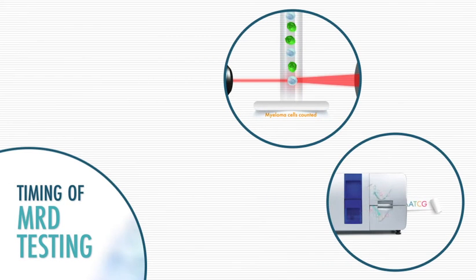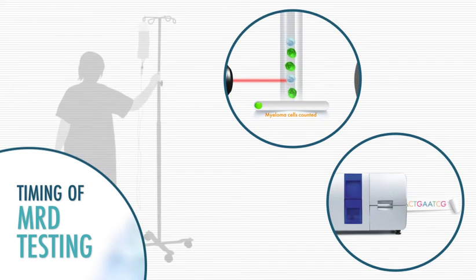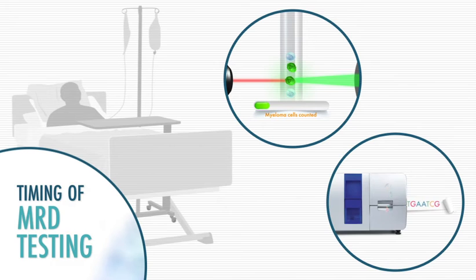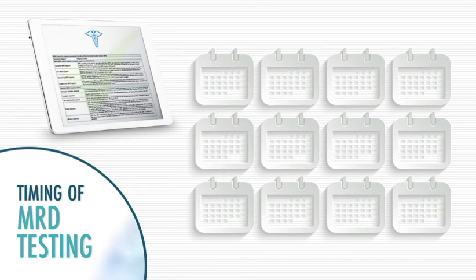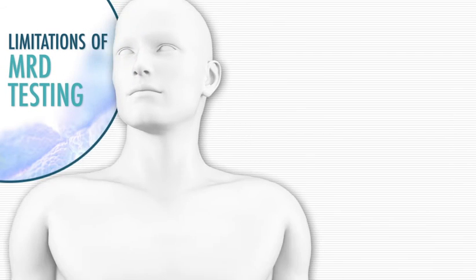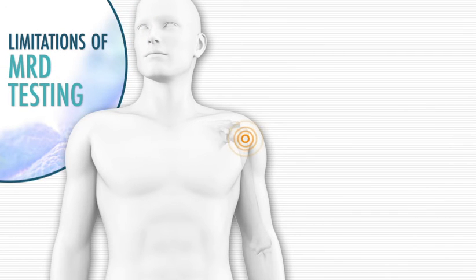MRD testing is usually performed at specific points of a patient's treatment — for instance, after a patient has completed combination therapy, or for patients who undergo a stem cell transplant, after the transplant. Current myeloma treatment guidelines support the use of annual MRD testing for patients who are receiving maintenance therapy. Currently, MRD testing is conducted primarily from bone marrow samples, but blood samples can also be used.